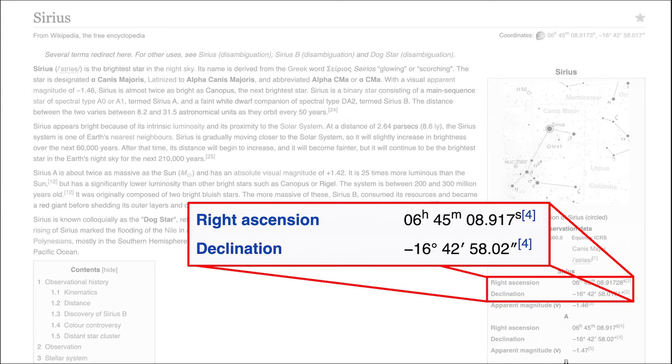A negative value for declination means that it lies below the celestial equator. Any star directly on the celestial equator would have a declination of 0 degrees.